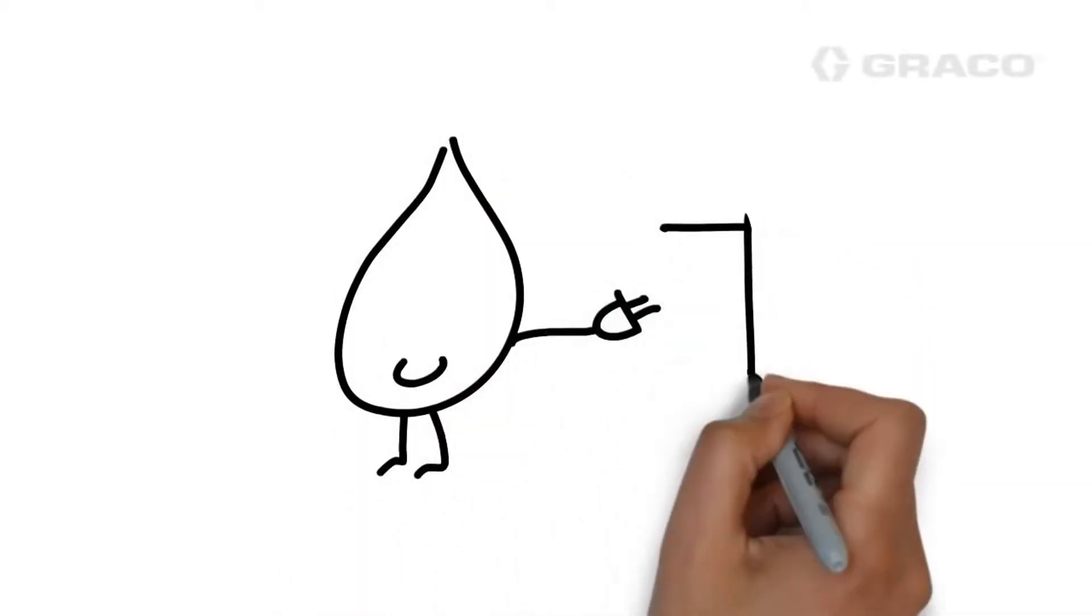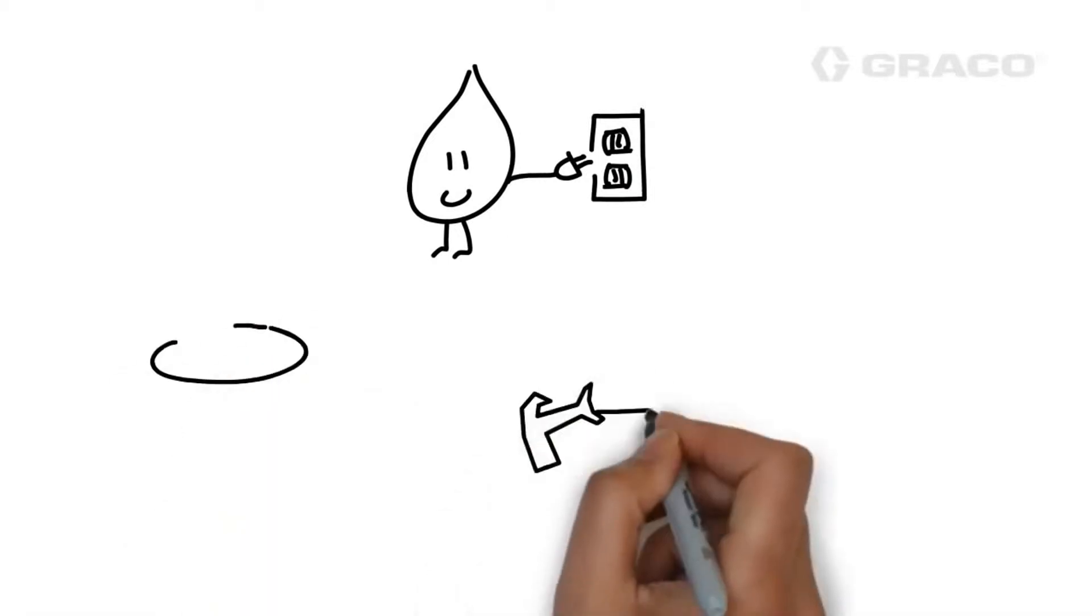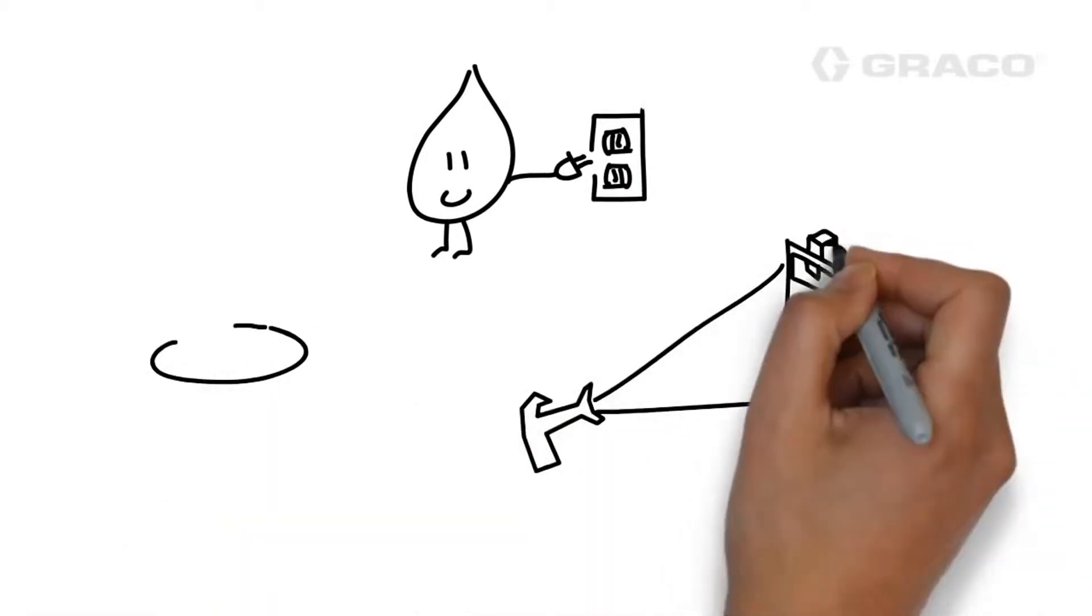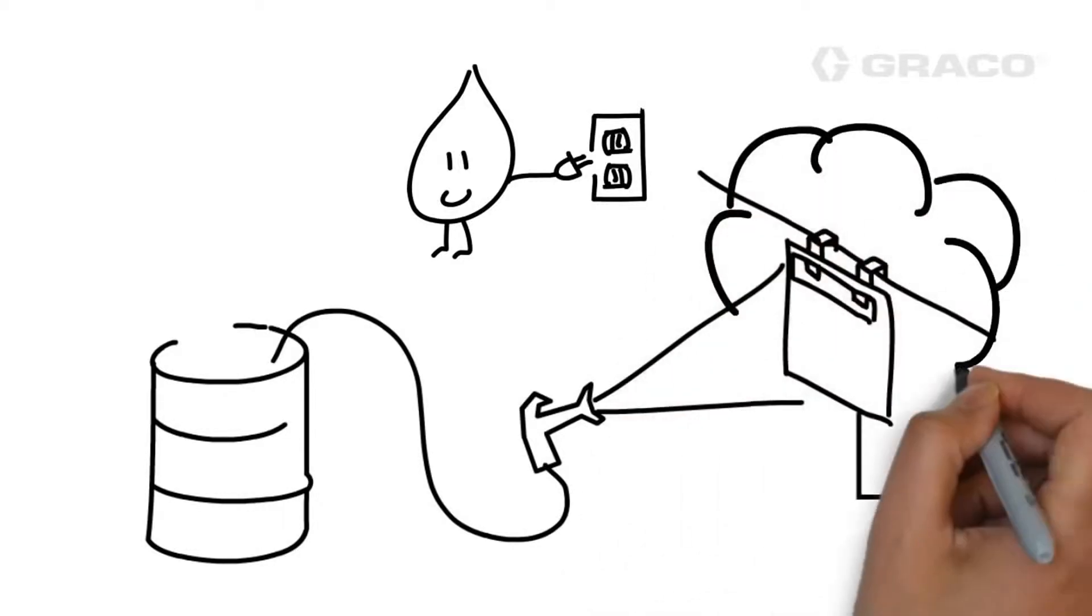Electrostatic painting is the process of charging particles and paint to more efficiently paint a workpiece. Paint in the form of atomized liquid is initially projected towards a grounded part using normal painting methods.